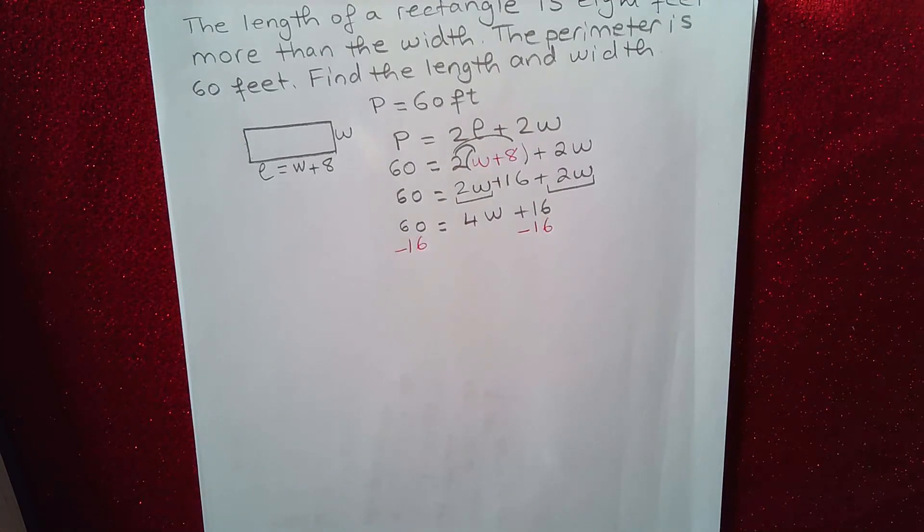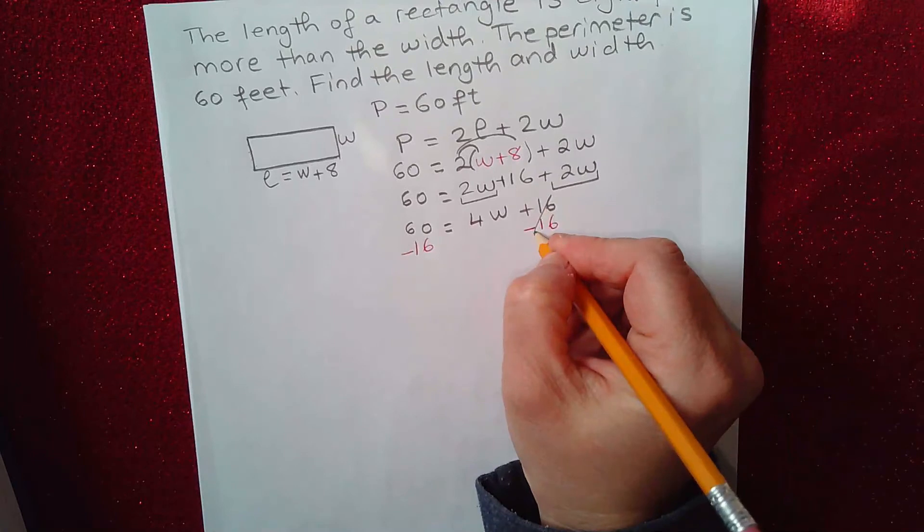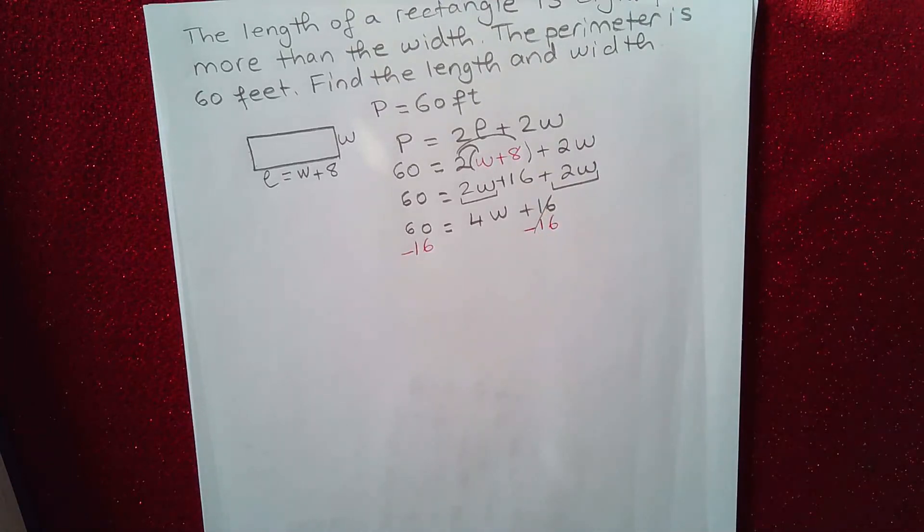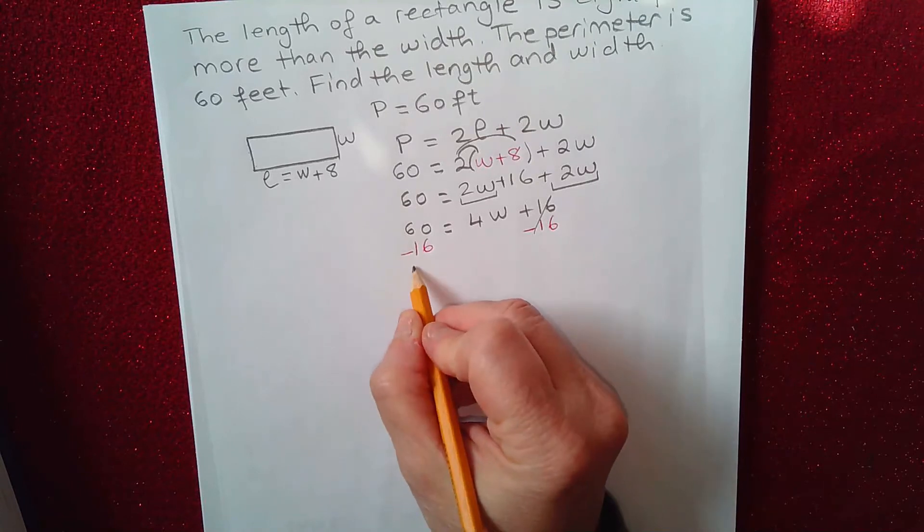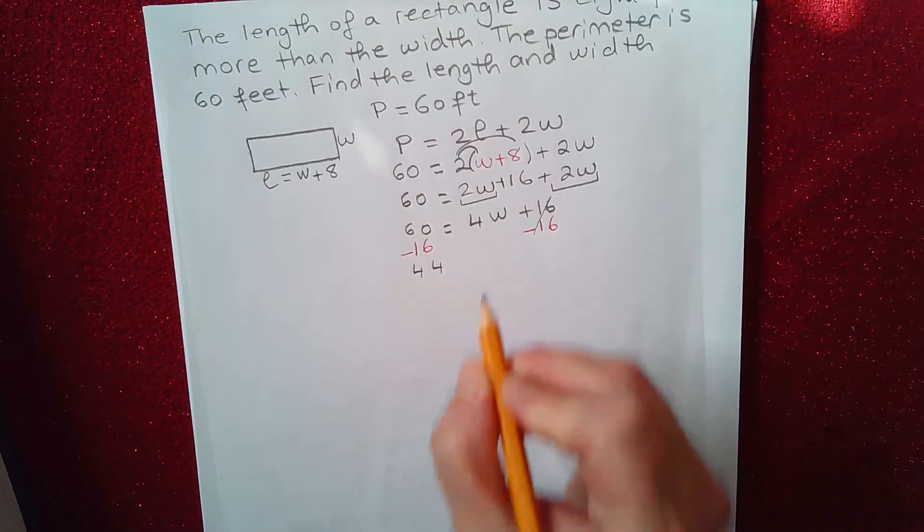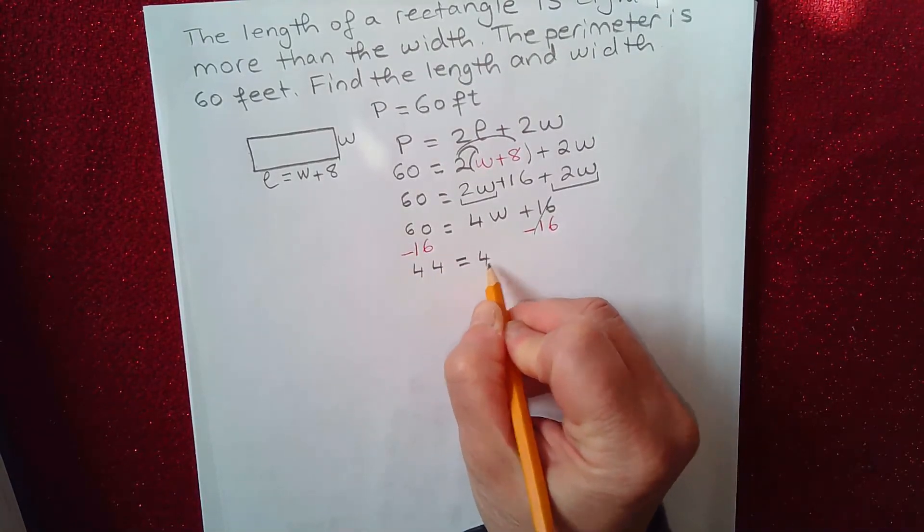So 60 minus 16—this will cancel out—and 60 minus 16 will give me 44. And that's equal to 4W.